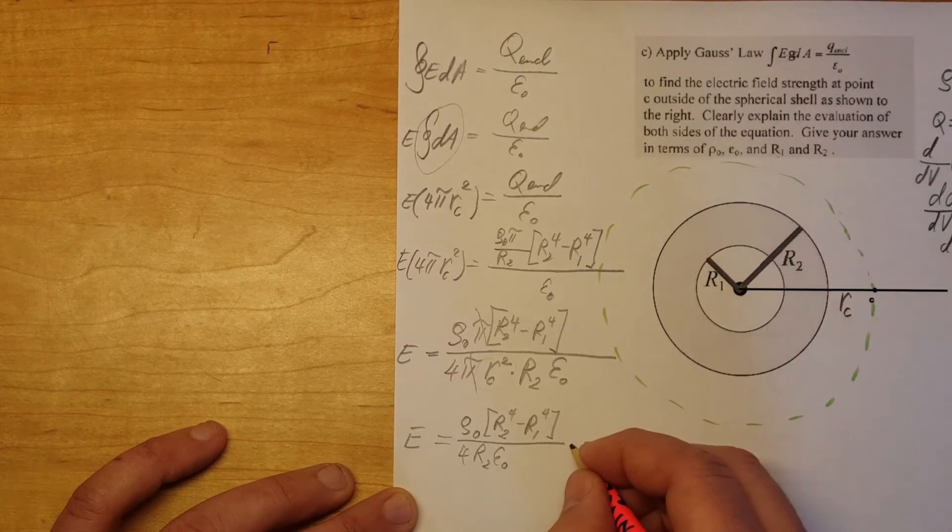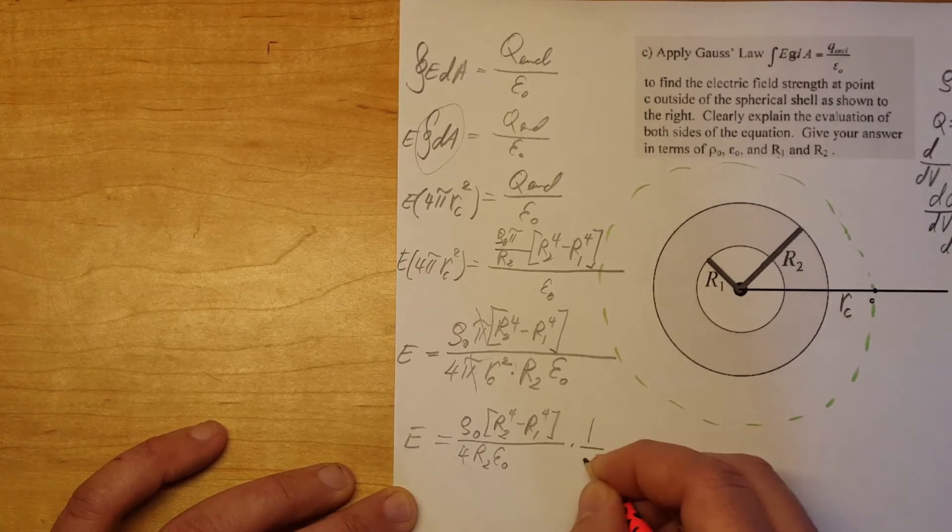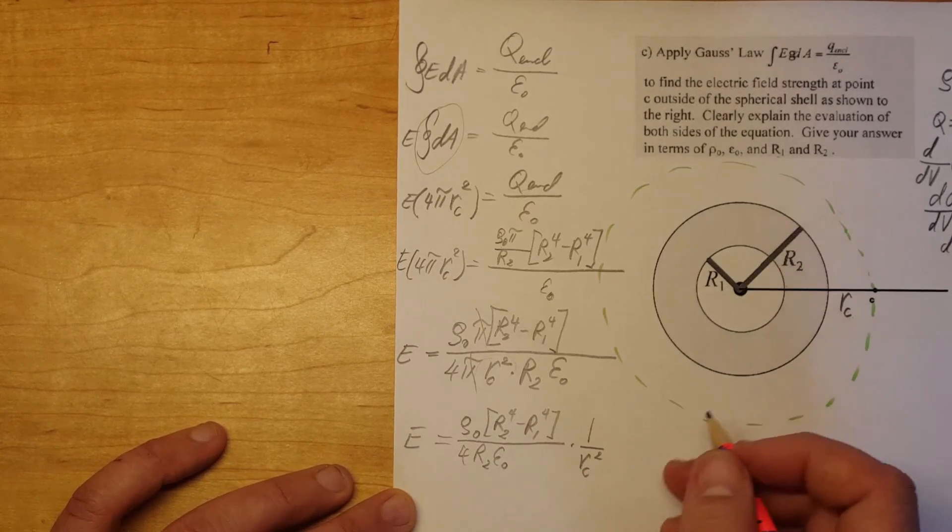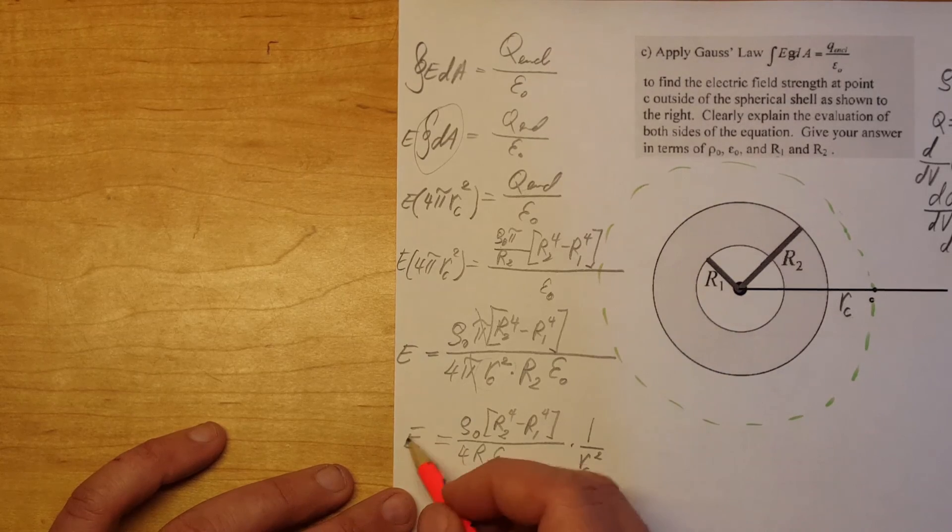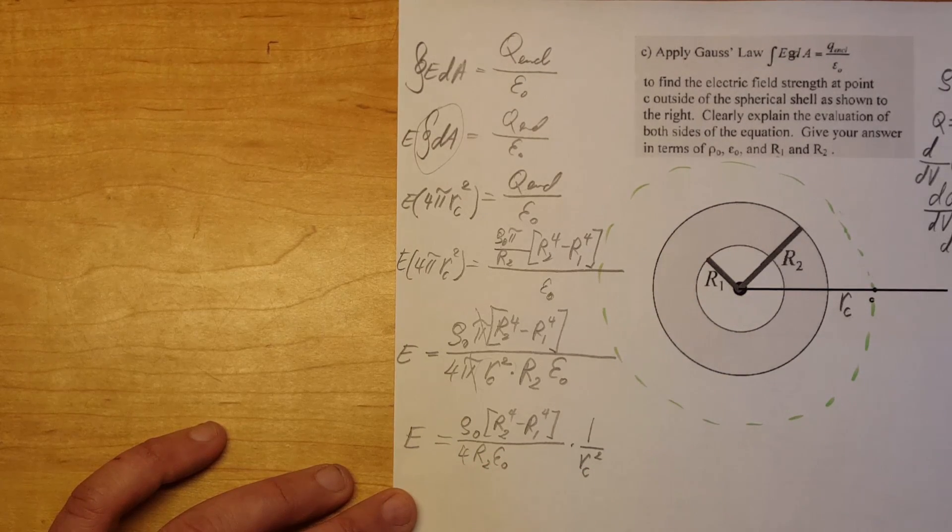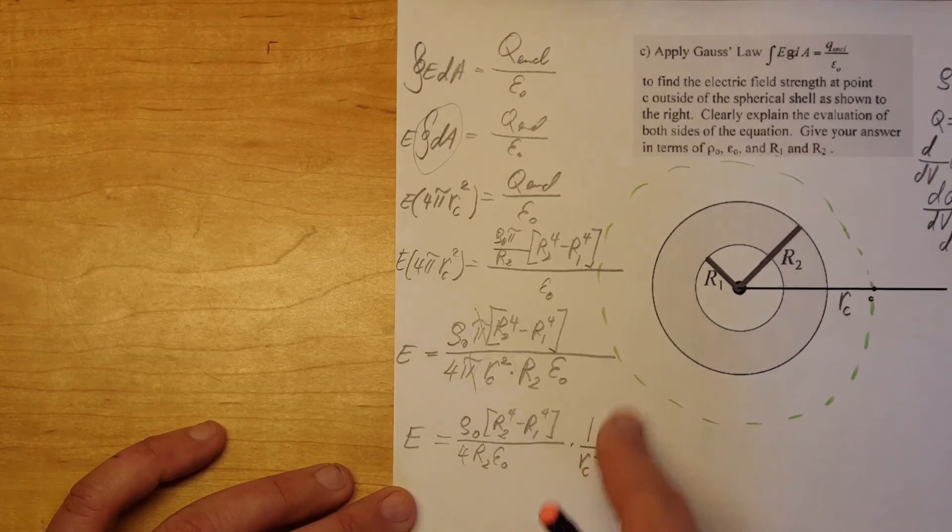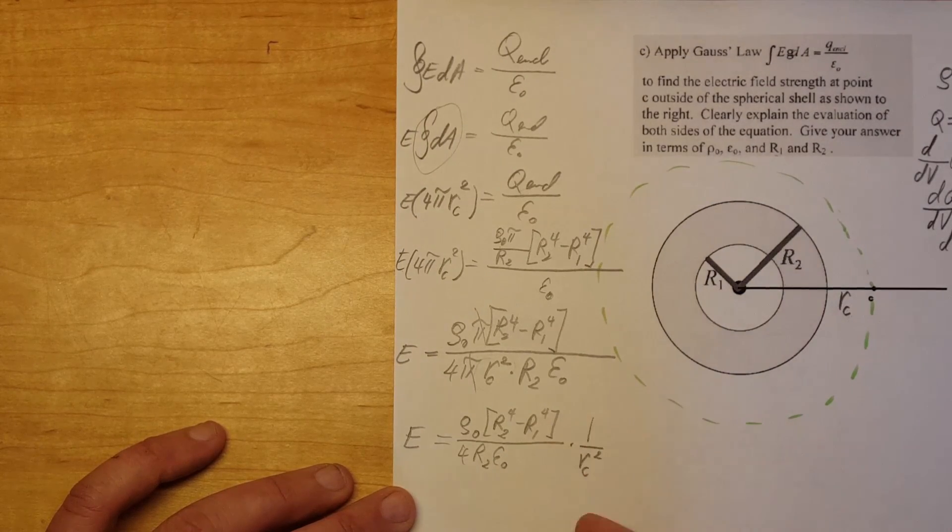So Rho 0 R2 4th minus R1 4th divided by 4 R2 E0 and then simply times 1 over Rc 2. You can write this down here. Same thing. But in case you want to graph it or have a visual how this would look like you could see that this is pretty much the same thing as 1 over x squared.